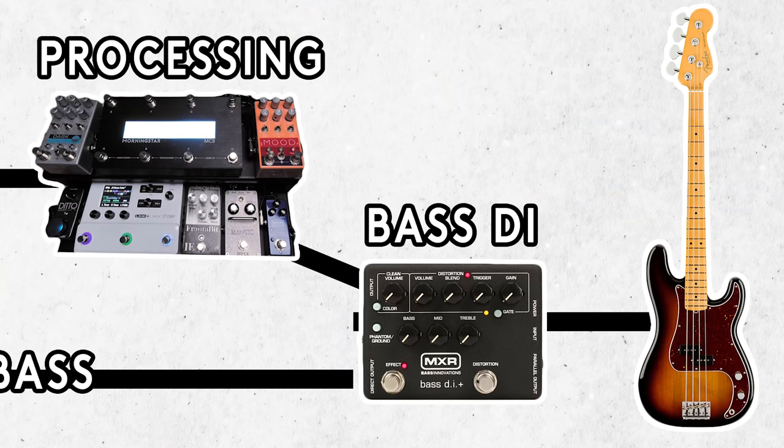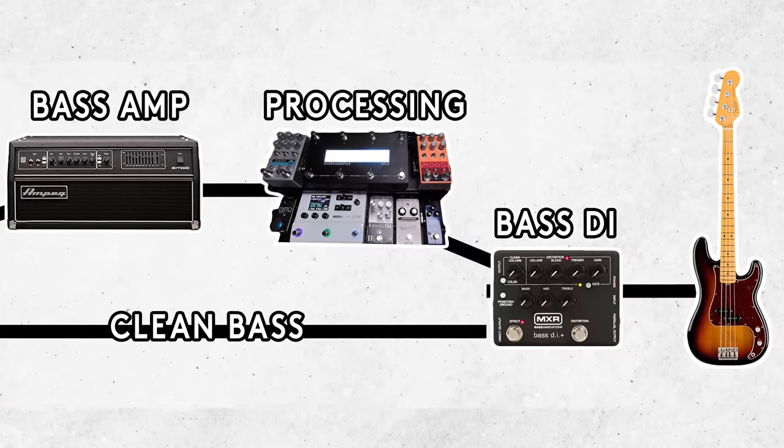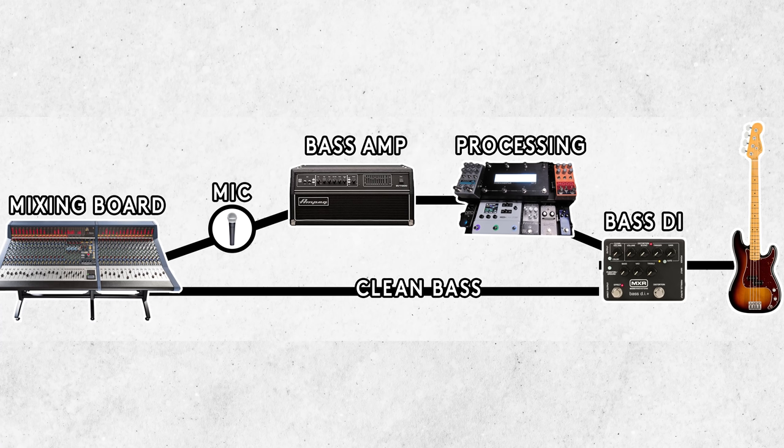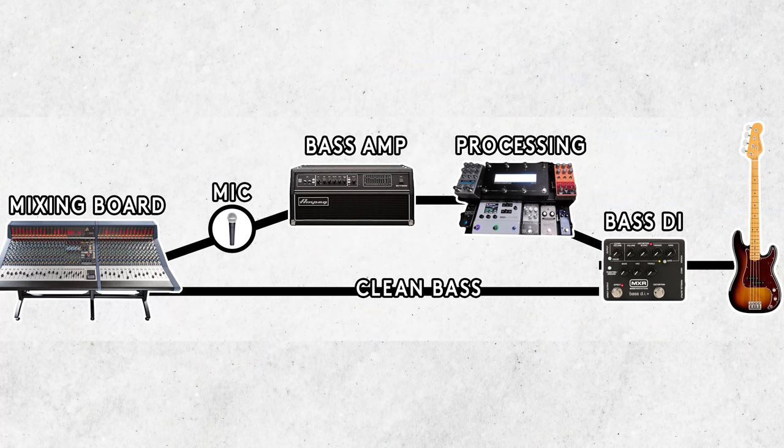Before I get started on the signal path, I want to mention one key differentiator between guitar and bass players. Bass players have been utilizing parallel signal paths in greater numbers than any guitar player I know. They take a DI right off the bass — the DI splits the signal where one side goes to the mixing board, and the through goes to the pedal board through all the different signal processing: compression, distortion, overdrive, modulation, delay, reverb. This way they have the clean bass right off the input and all the processing blended in parallel.